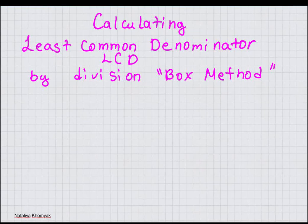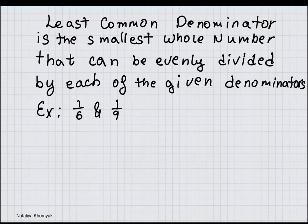Calculating Least Common Denominator LCD by division. You can think of it as a box method. Least Common Denominator is the smallest whole number that can be evenly divided by each of the given denominators.